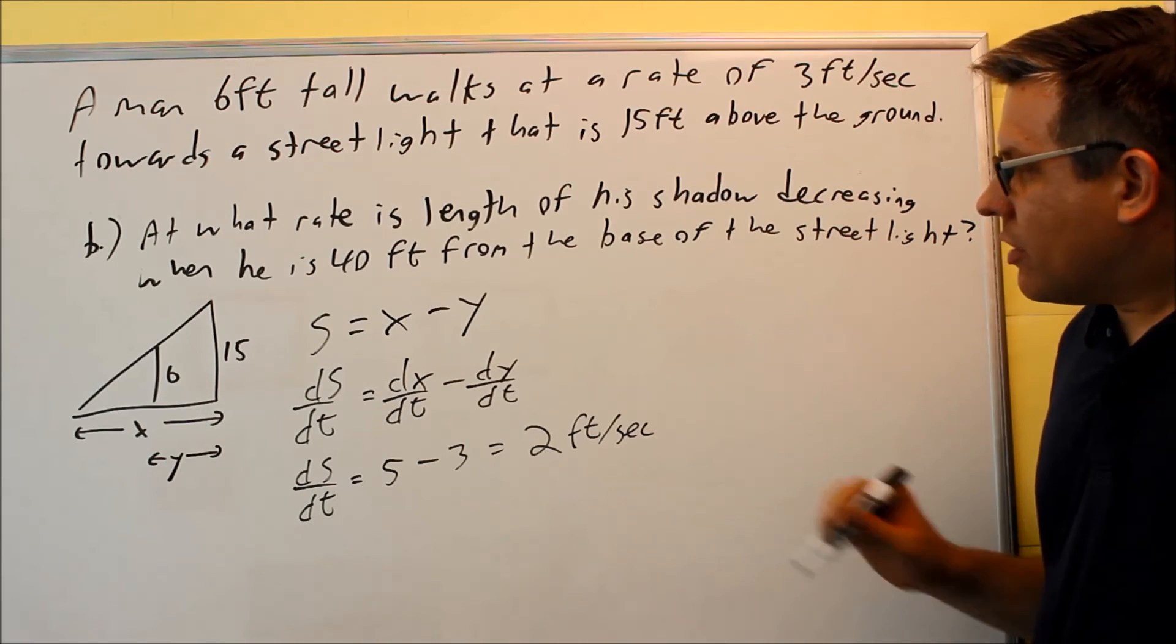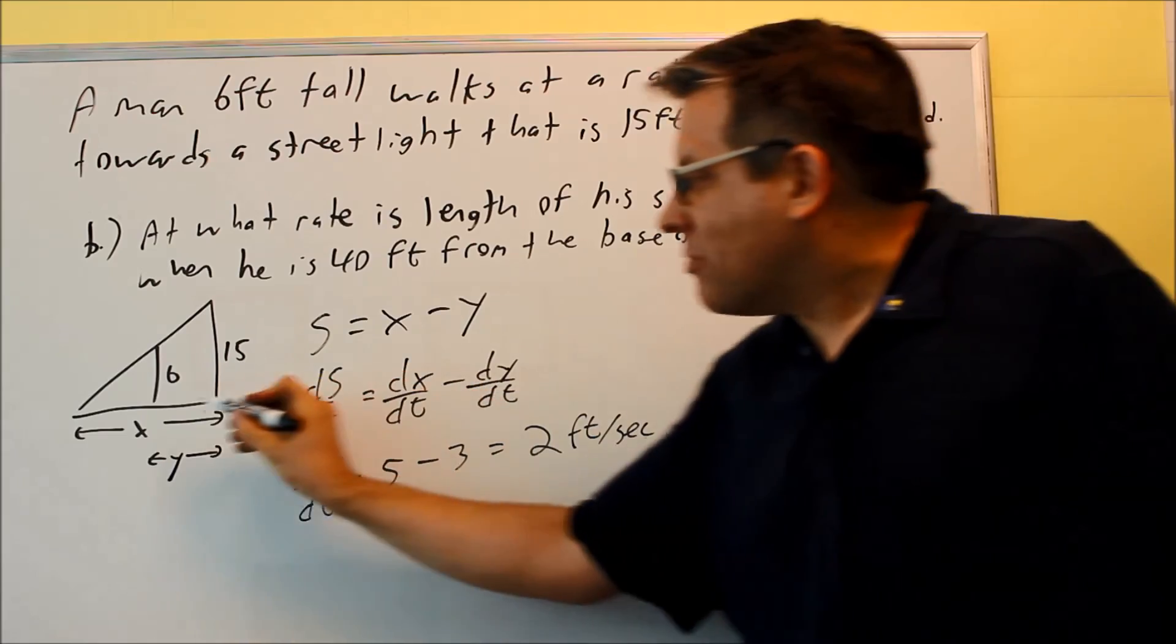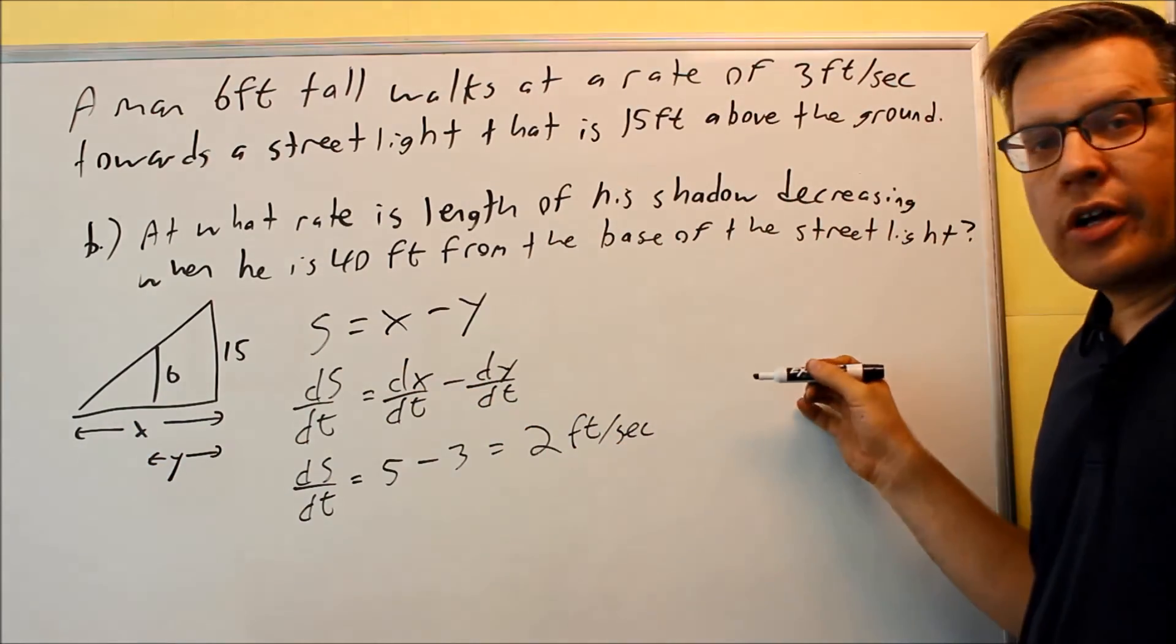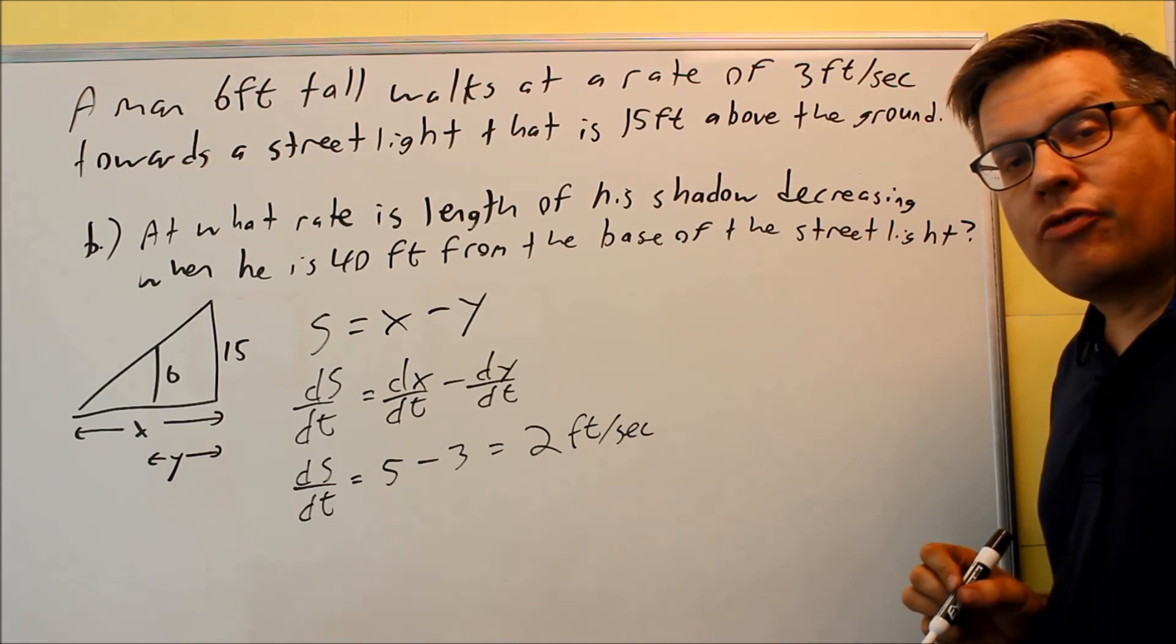Well, it actually means that his shadow is decreasing at a constant amount, so it doesn't actually matter where he is along here. No matter where he is, the shadow is always going to be decreasing at a constant rate of 2 feet per second.